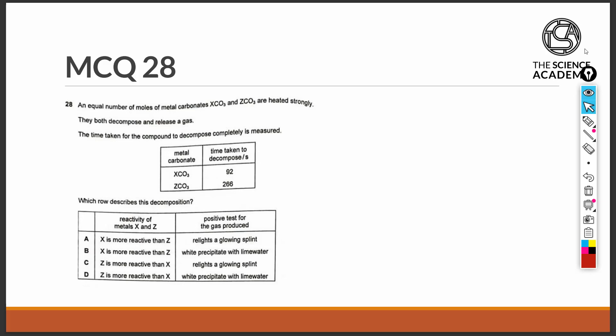Question 28. An equal number of moles of metal carbonates, X carbonate and Z carbonate, are heated strongly. They both decompose and release a gas. The time taken for the compound to decompose completely is measured. Which rule describes this decomposition?